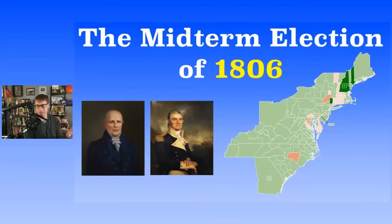Think about this: 142 seats total in the House, and the Democratic-Republicans had 116. Federalists only had 26 — that is an overwhelming majority. Thomas Jefferson is going to do something very unpopular here, even with some Democratic-Republicans — the Embargo Act. But regardless, it's going to be many more years of Democratic-Republican dominance.